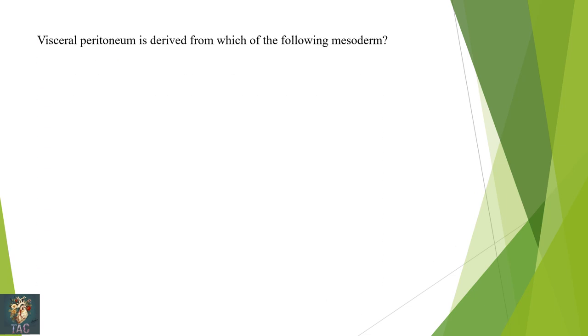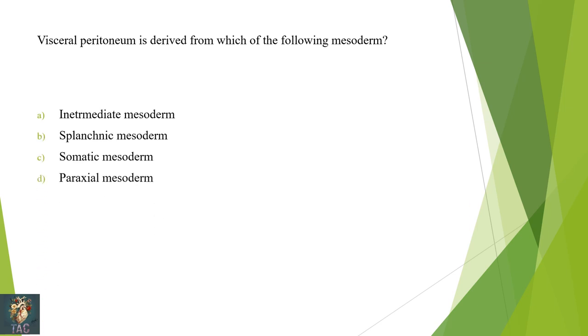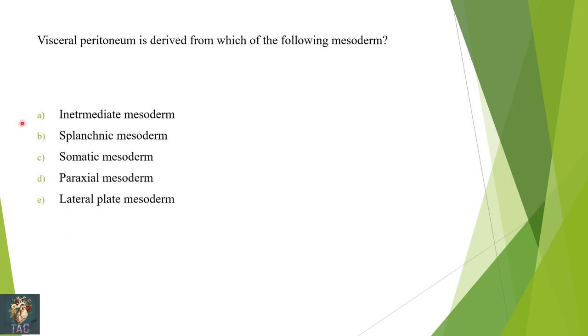Next: the visceral peritoneum is derived from which mesoderm? This is a simple and important question from embryology. The splanchnic mesoderm forms the visceral peritoneum.